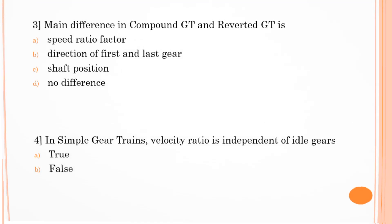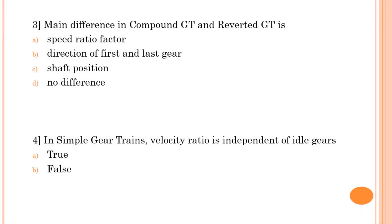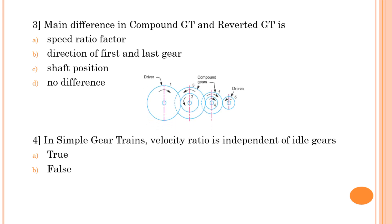Third question: the main difference between a compound gear train and a reverted gear train is? In a compound gear train, two or more gears are mounted on a single shaft. In this diagram, on the second shaft gears 2 and 3 are mounted, and on the third shaft gears 4 and 5 are mounted — these are compound gears.